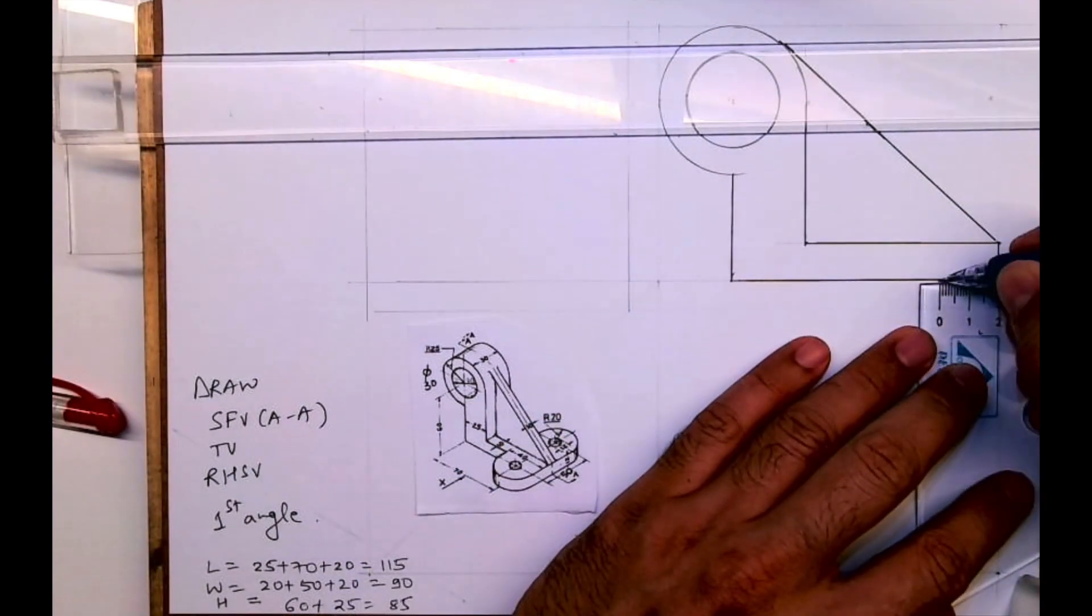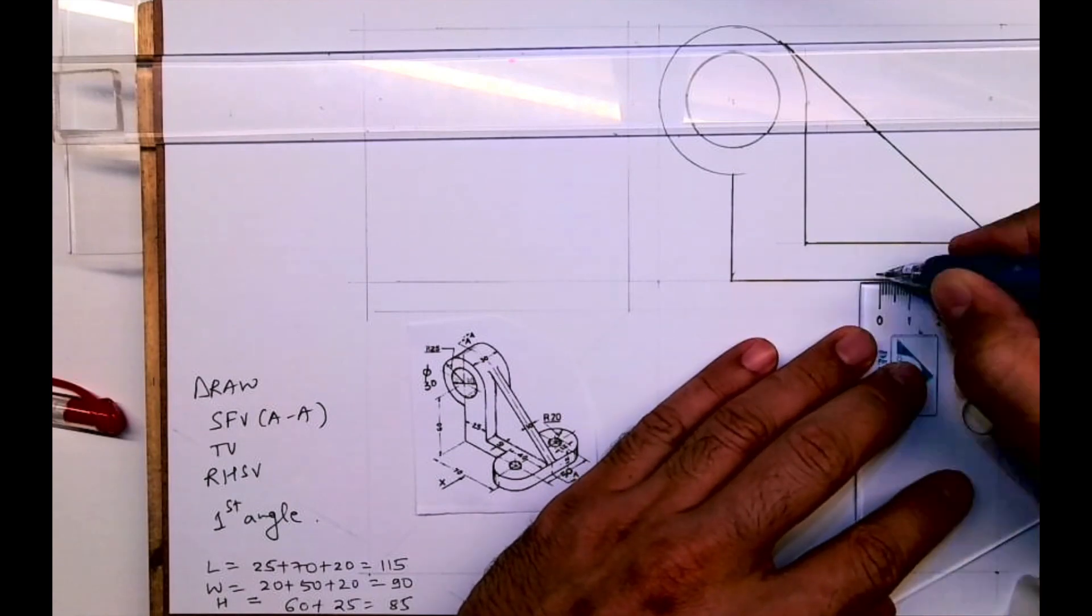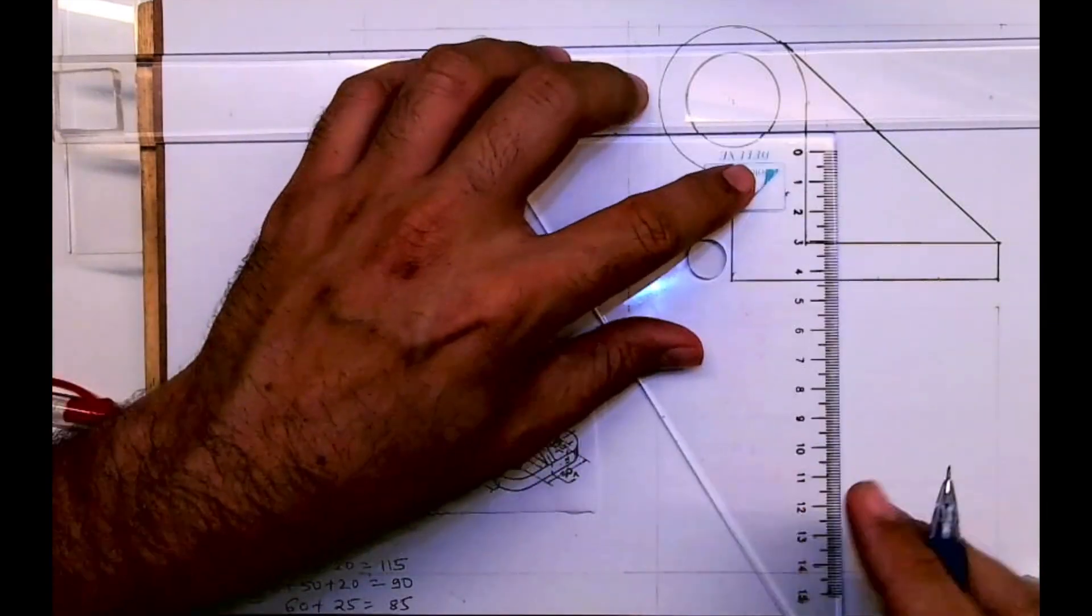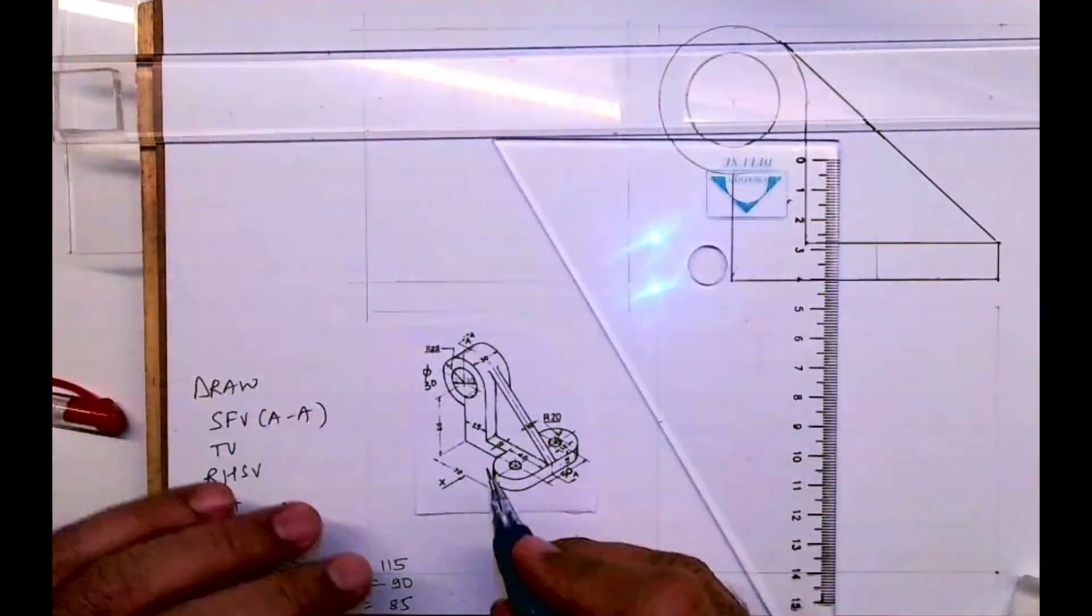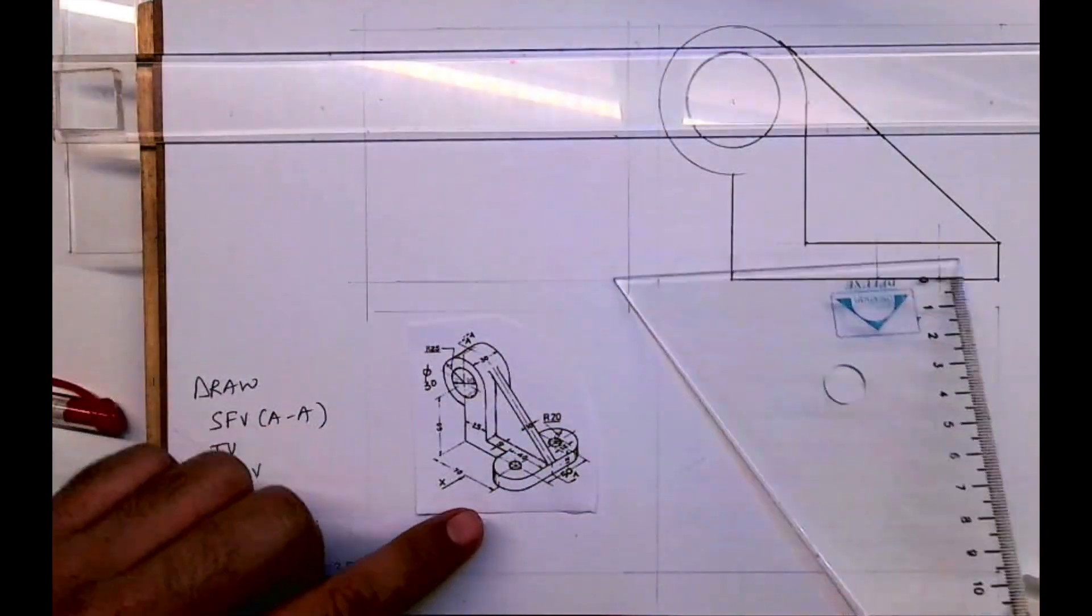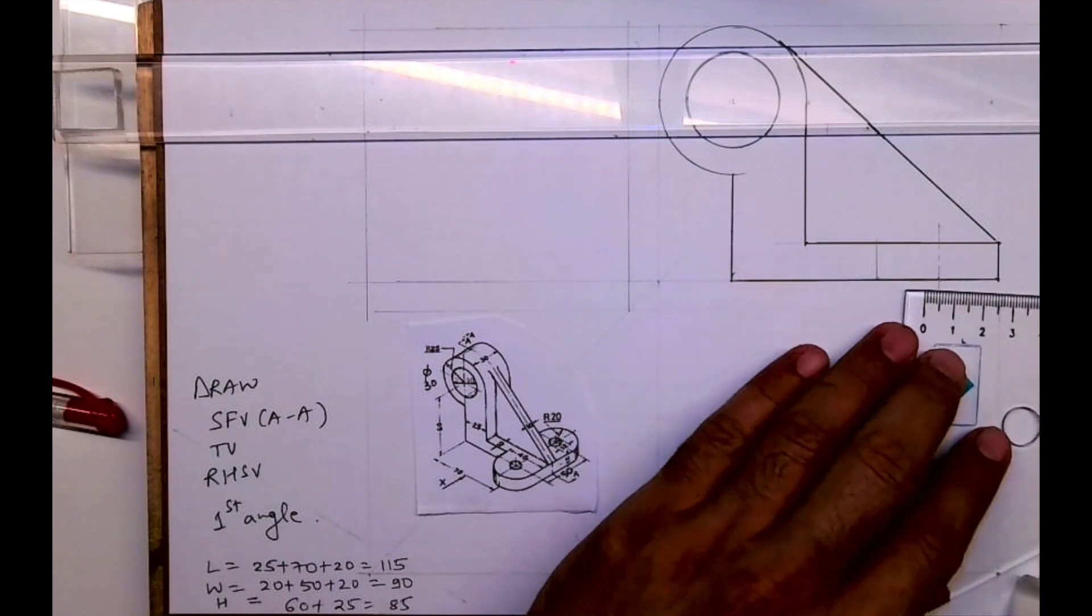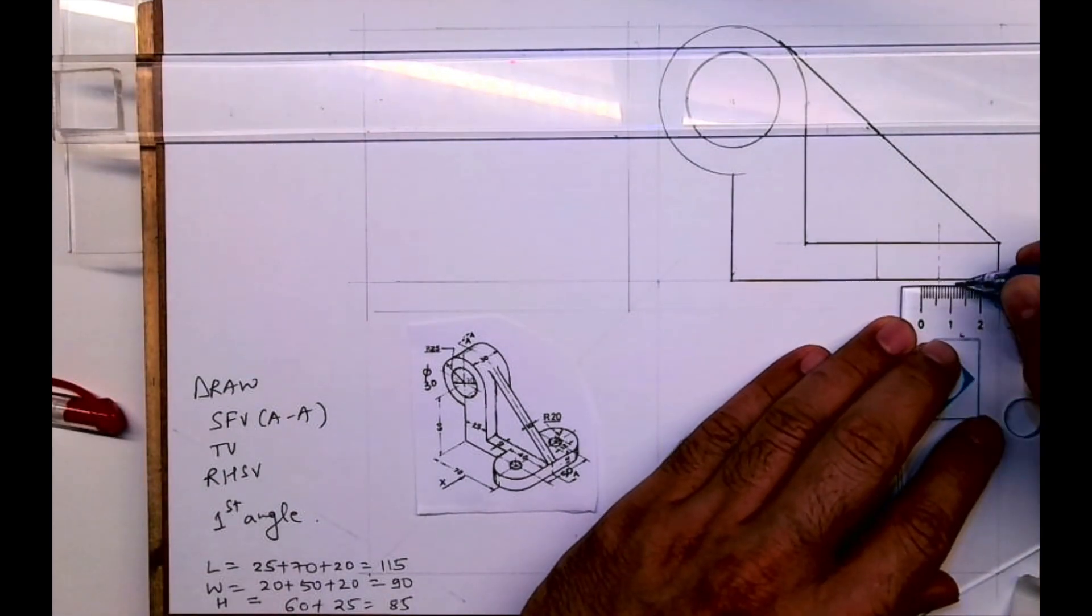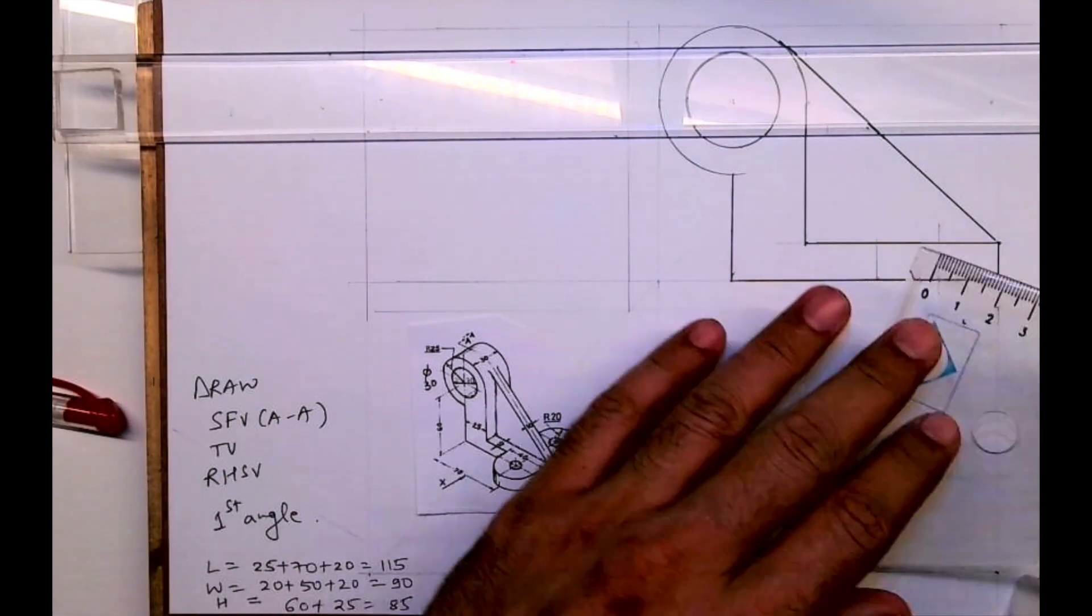Now there is one dotted line also. So you take 20 and you draw center line, and here 40 you'll draw one dark line. Right now I'm not drawing dark because in section it will go away. So I'll draw axis line. And there is diameter 12, so I will take 6, 6 on both the side.